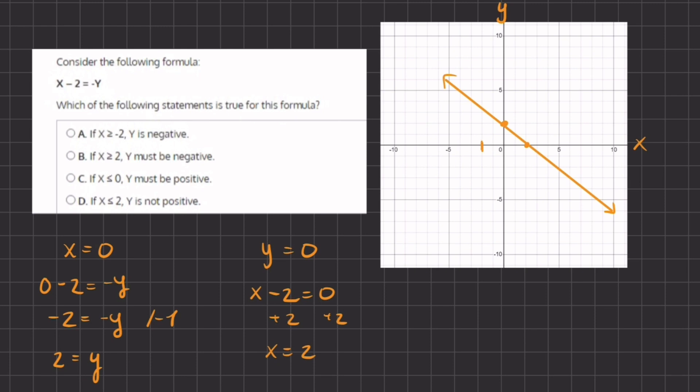So when x is greater than or equal to negative 2, then y is negative. Well, we can tell here that the y is going to be positive up until this positive 2 and then the y will change to be negative. So A is incorrect because it is not always negative.